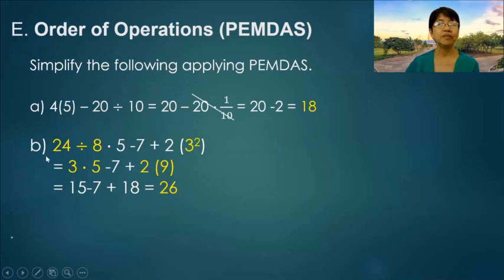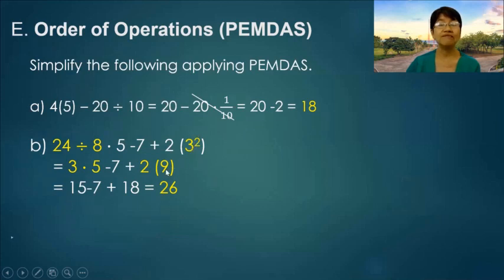Letter B: the first operation is division, so we perform this first. 24 divided by 8 is 3, then multiply by 5. Copy minus 7. We also evaluate the exponent: negative 3 squared becomes positive 9. So we multiply 2 times 9 to get 18. Then 3 times 5 gives 15, and 15 minus 7 plus 18 is equal to 26.